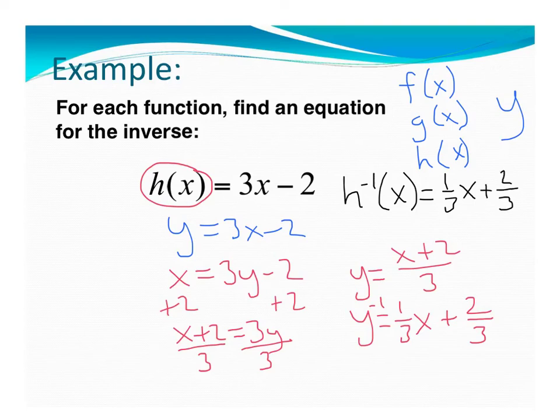All right. Now I would accept either x plus 2 over 3 or the 1 third x plus 2 thirds in a short answer. However, you'll most likely see it written like this on multiple choice to be able to recognize either one.